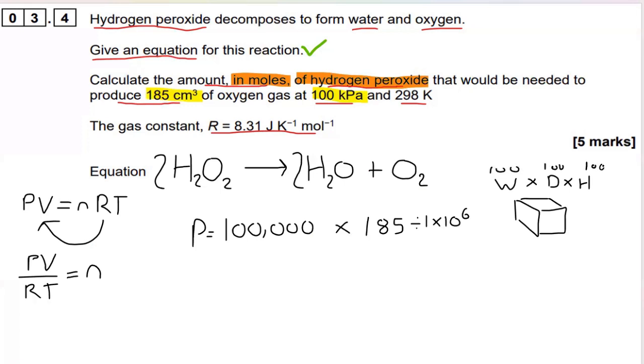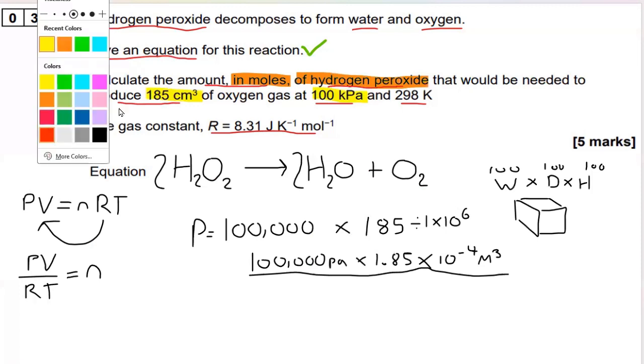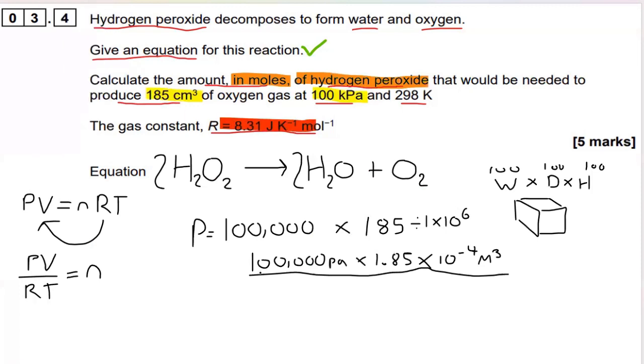Why? Because a meter cube is 100 centimeters wide, 100 deep, and 100 high. So 100 times 100 times 100. That's a million for those of you that struggle with that. Okay, so let's rewrite that. 100,000 pascals is the pressure times 1.85 times 10 to the minus 4 meters cubed. We've converted our centimeters into meters cubed. Okay, real simple.